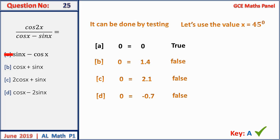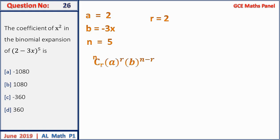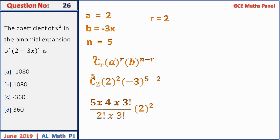Question 26: find the coefficient of x² in the binomial expansion. With a = 2, b = −3x, n = 5, r = 2, the term is C(5,2) × 2² × (−3)³ × x³ — wait, for x² we use the general term. Simplifying: 10 × 4 × (−27) = −1080. Answer A.